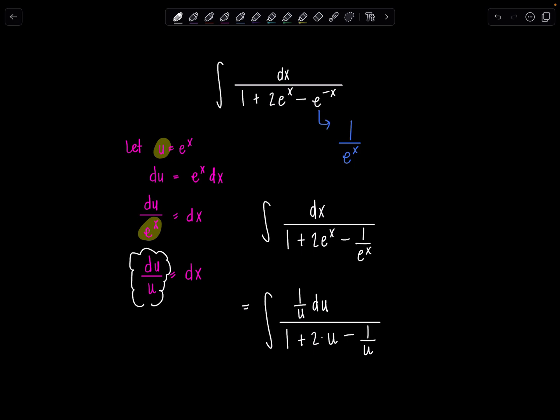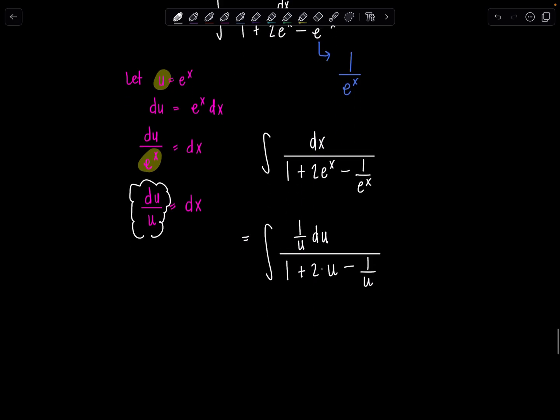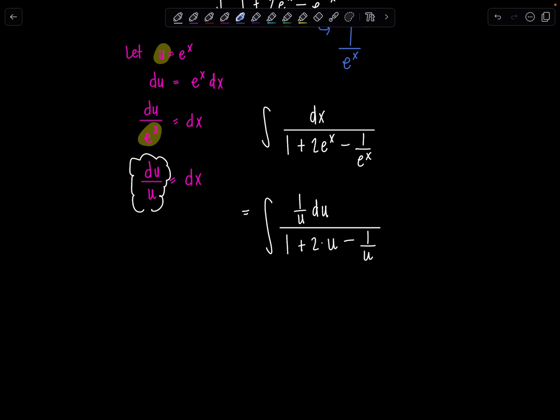Now we need to clean things up because we've got a complex fraction going on. We've got fractions inside of fractions. So a few different options. What I would say is the nicest here is this u, I can just move it down to the denominator and distribute, and that'll fix everything for me. So notice we have integral du over, if that u comes down here,